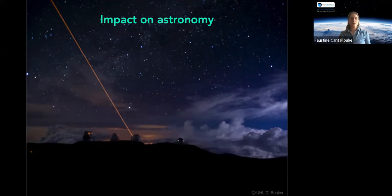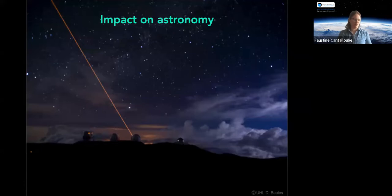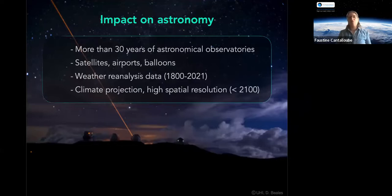How does this connect to astronomy? Today more than 50% of people can't see the stars because of light pollution. The idea was to look at how climate change affects observational, ground-based astronomy. We have more than 30 years of weather data collected by observatories for their own operations, plus data from satellites, airports, and balloons. An important resource is weather reanalysis data — the European, Japanese, and US versions — the European one, ECMWF, is very good and freely available.